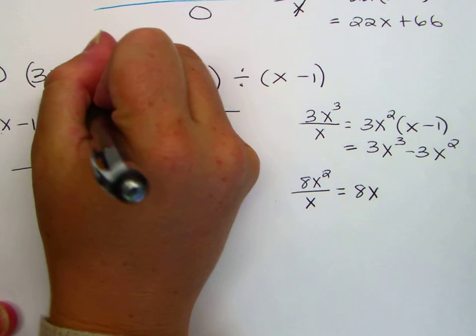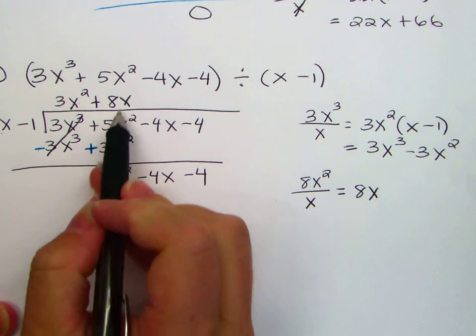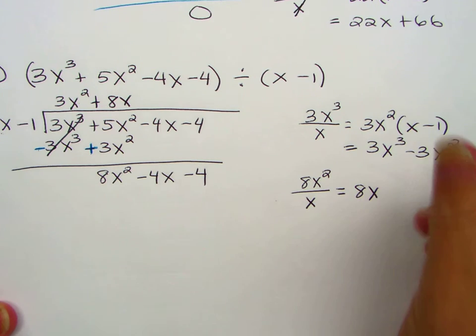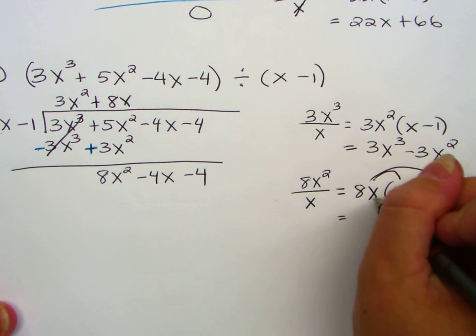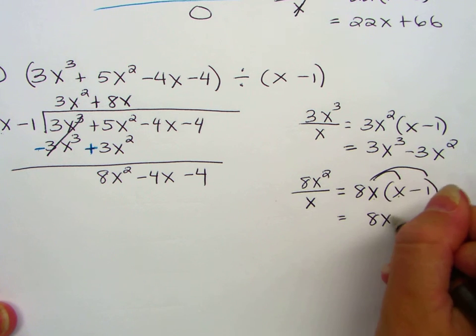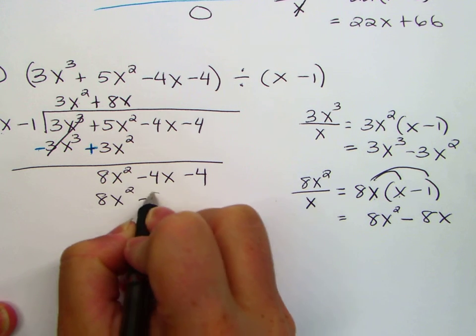Multiply by that number, 8x goes on the top, we need to fill in what to subtract. 8x times the outside, write it on the side, show your work, distribute. 8x times x is 8x squared minus 8x times 1 is 8x, so 8x squared minus 8x.